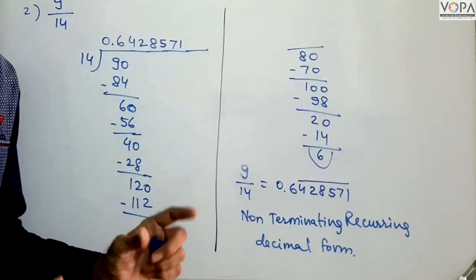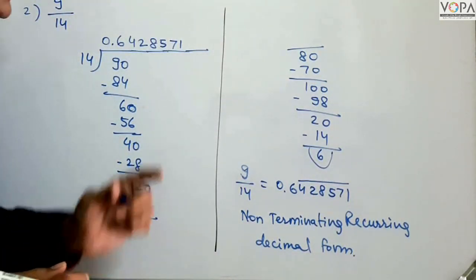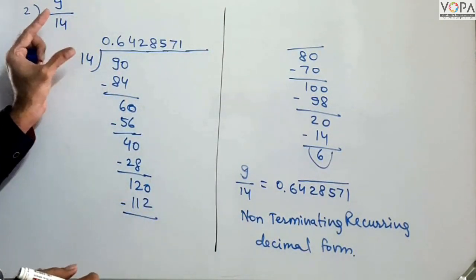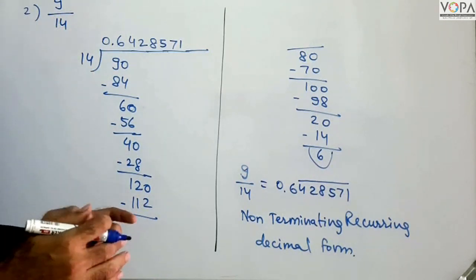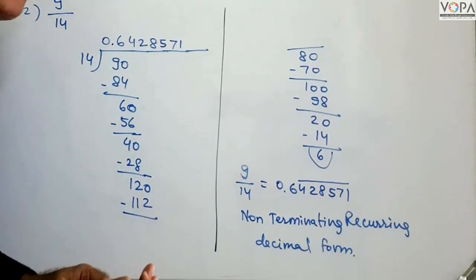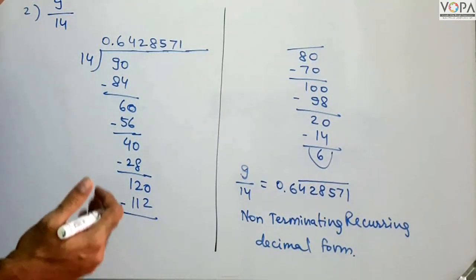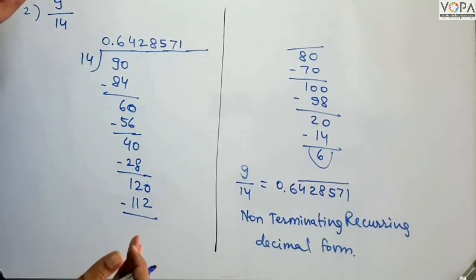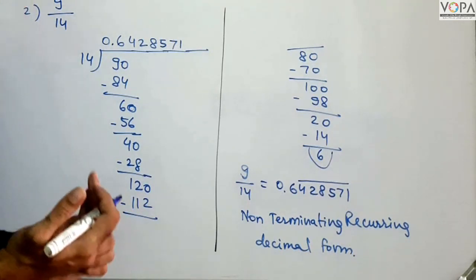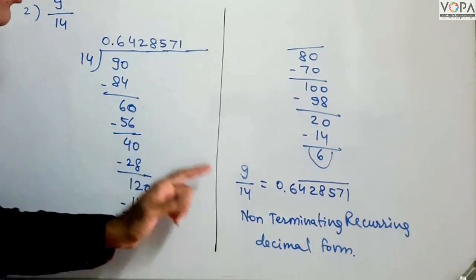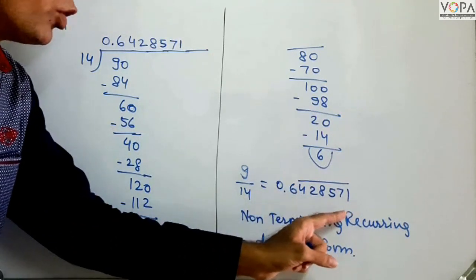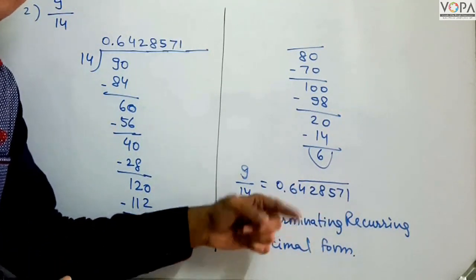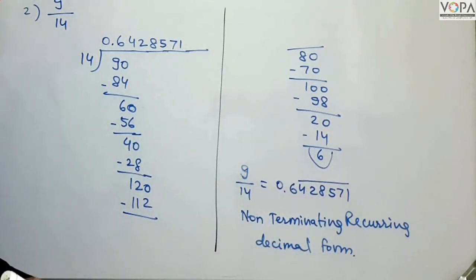So we have to understand what we have learned: one decimal form is either terminating — which is when the remainder is 0 — or non-terminating recurring — which is when the digits repeat.